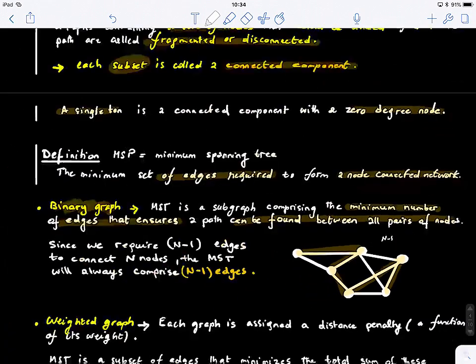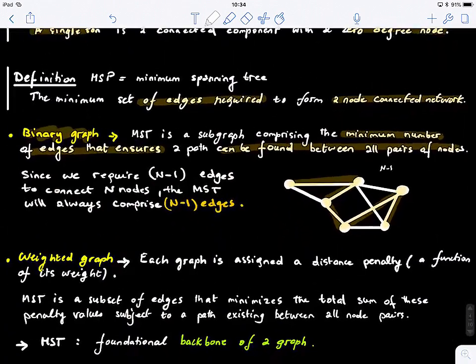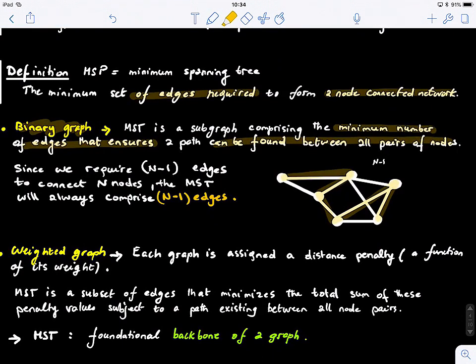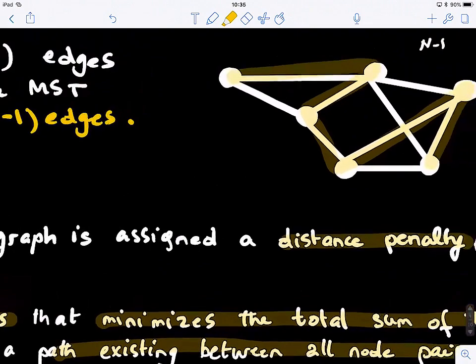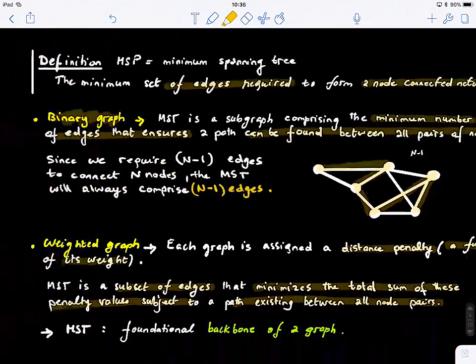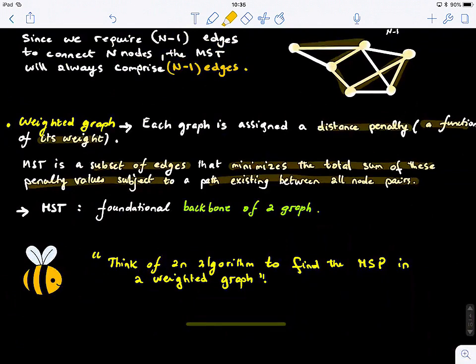Now, in a weighted graph, this is important. So generally real-world applications, graphs are weighted. So we can assign a distance penalty or a function of the weight to each edge in the graph. And MST here basically is a subset of edges that minimizes the total sum of these penalty values subject to a path existing between all node pairs. So this is what actually we can call a foundational backbone of a graph. So MST allows you to find the backbone of a graph, and this has different applications.